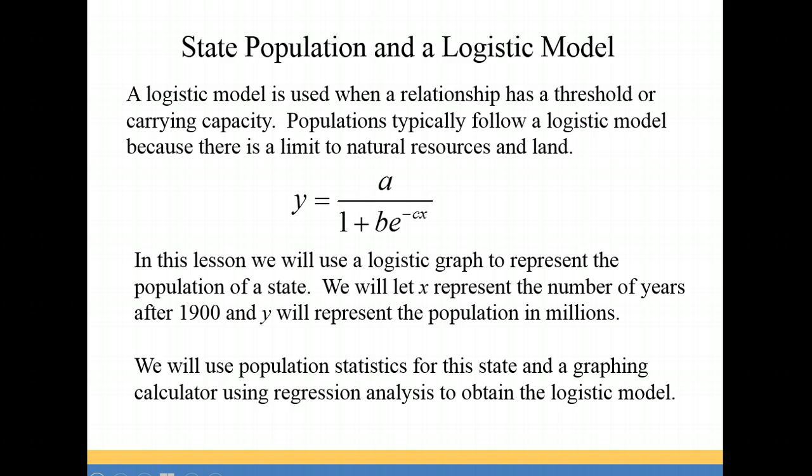For this problem we're going to be using the logistic model y equals a divided by 1 plus b times e to the negative cx. We're going to let x represent the number of years after the year 1900 and y will represent the population in millions.